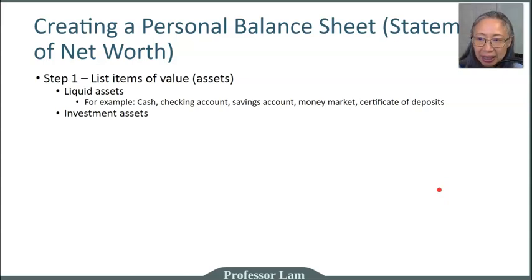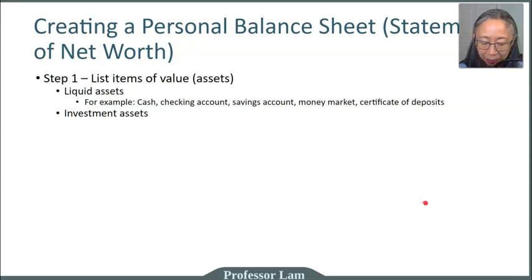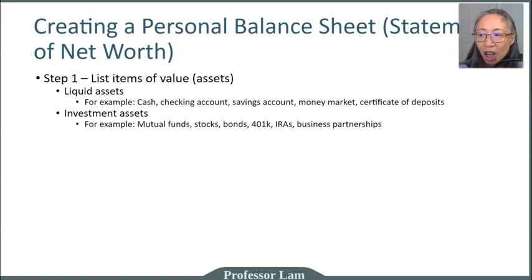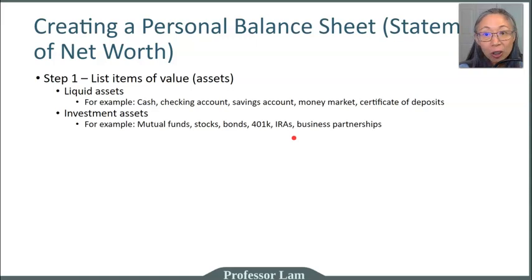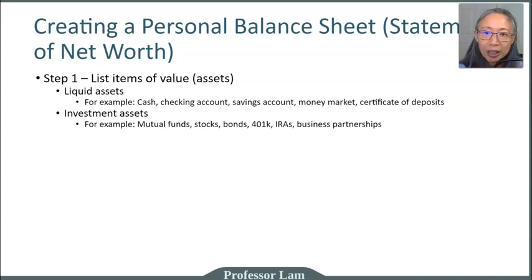The next category of assets are investment assets — what we call financial assets. A good example would be stocks and bonds, and it can also be a retirement account. A 401k is a retirement account. We'll go over these specific terms, but the key idea is that these are longer-term investments and they cannot be turned into cash as readily. In order to use money from your retirement account, there are a lot of restrictions.